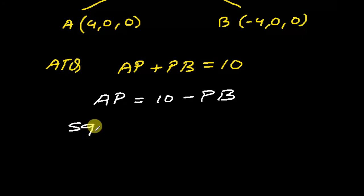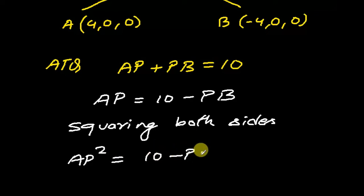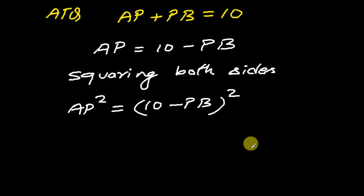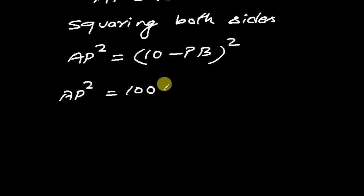Squaring both sides: AP² = (10 - PB)². Applying the (A - B)² formula, we get AP² = 100 + PB² - 20PB.